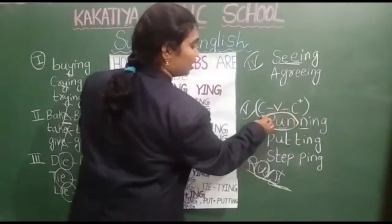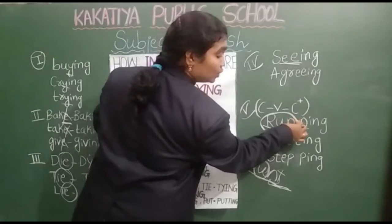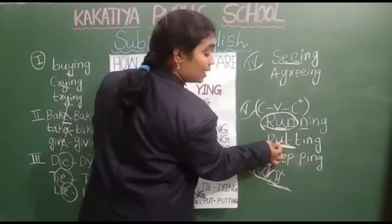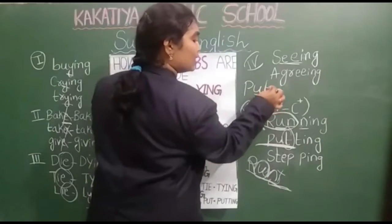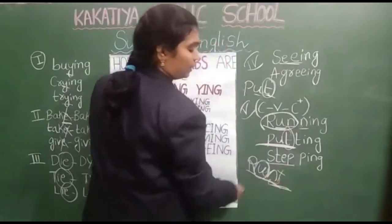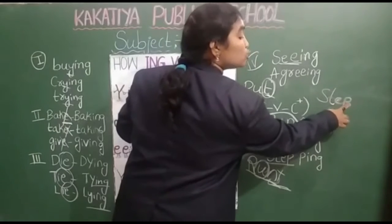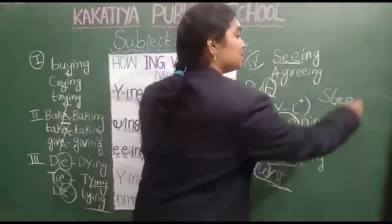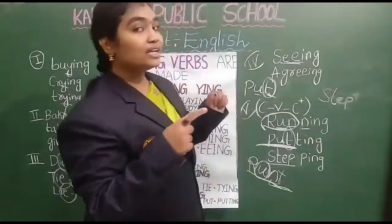Let us see some examples. R-U-N — run. U is the vowel and N is the consonant. So we double the consonant: R-U-N-N-I-N-G, running. Put — U is the vowel and T is the consonant, so we double T: P-U-T-T-I-N-G, putting. S-T-E-P — step. E is the vowel and P is the consonant, so we double P: S-T-E-P-P-I-N-G, stepping.